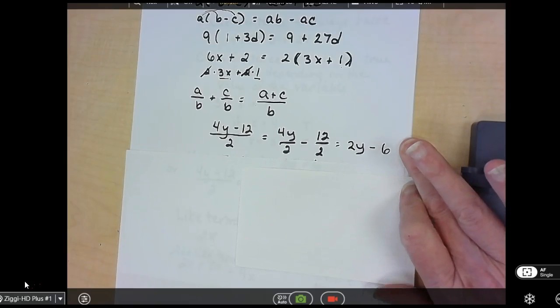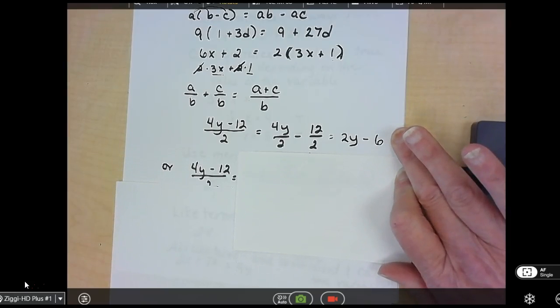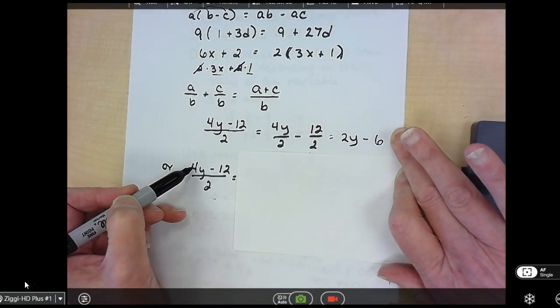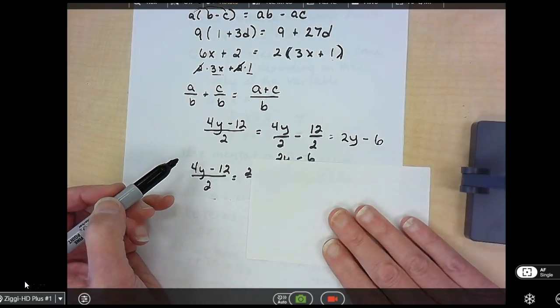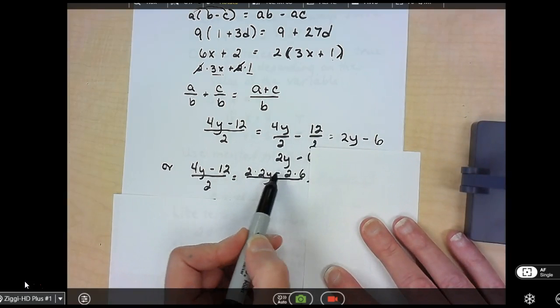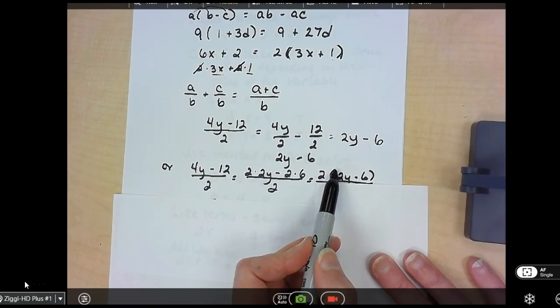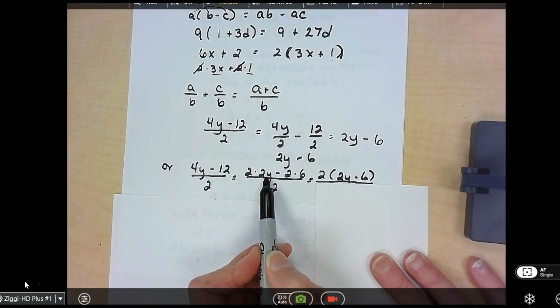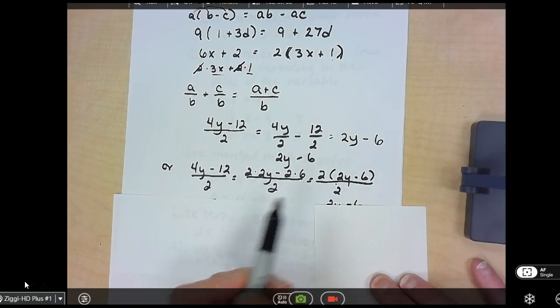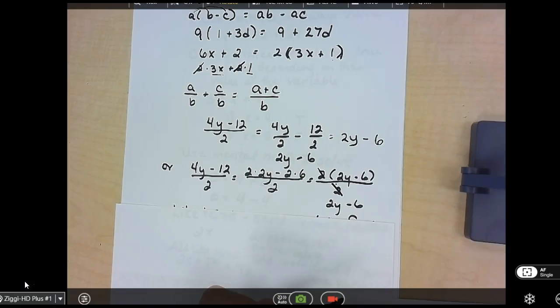But there are times that, especially once we get to algebra 2, advanced algebra, that you have to factor out what is in common before you can divide it. So if we look at the 4Y, that is 2 times 2Y. The 12 is 2 times 6. So it has the 2 in common. So we would write it as, using distributive property, the 2, parentheses, and the remainder, 2Y and the 6. And then we can cancel these 2's and have the 2Y minus 6. We will use that a lot in the future, so it's nice to get used to it now.